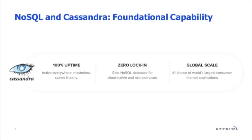From the 100% uptime standpoint, some of you might raise an eyebrow and ask how exactly can you claim that. Cassandra is a distributed database made up of multiple nodes or instances — it's not a single instance. It's a masterless and peer-to-peer architecture, meaning any node can do what any other node does. I can actually lose a majority of my nodes or data centers and the database is still up and available to serve requests. It also scales linearly — if you want to double your throughput or capacity, you just double your nodes. These can be databases ranging from a handful of nodes to 100,000 nodes.